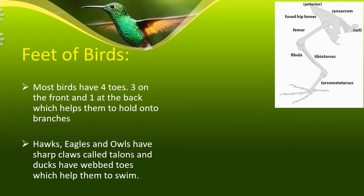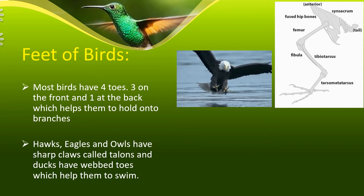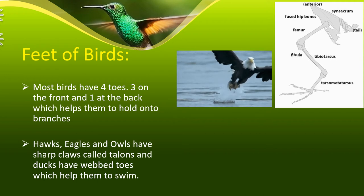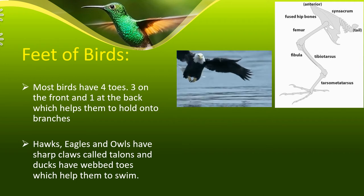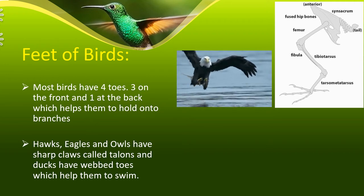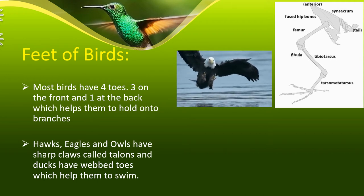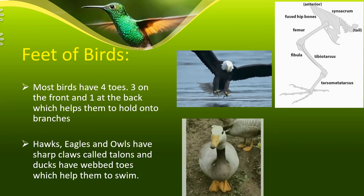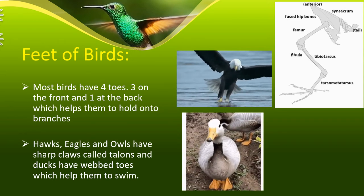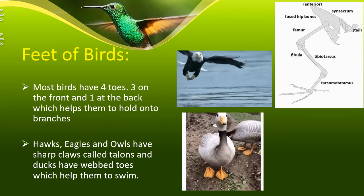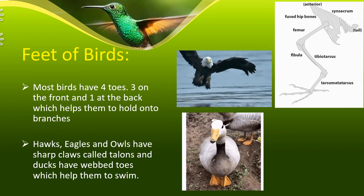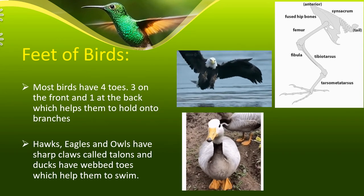Birds such as the hawk and eagle have sharp claws called talons, which help them to catch their prey. Ducks, geese, and other water birds have webbed toes — toes joined by a flap of skin — which help them to swim.